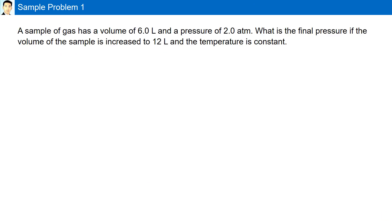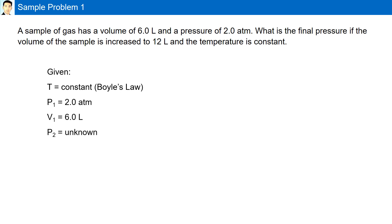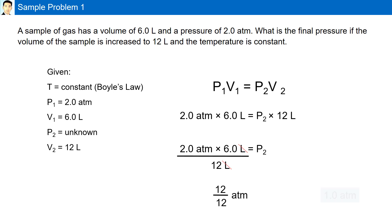Sample problem one. A sample of gas has a volume of six liters and a pressure of two atmospheres. What is the final pressure if the volume of the sample is increased to 12 liters while the temperature is constant? Given temperature is constant, we'll be using Boyle's law. Pressure is two atmospheres, volume is six liters. The second pressure is unknown and the second volume is 12 liters. Plugging it into our formula, we have the final pressure as one atmosphere. Since the volume was doubled, the pressure has to be halved.